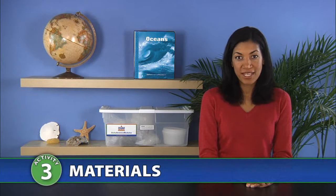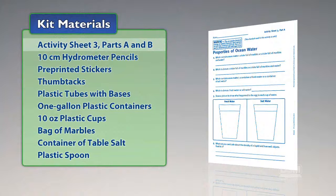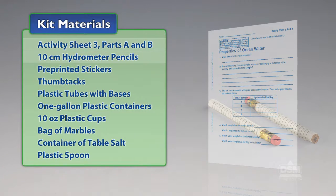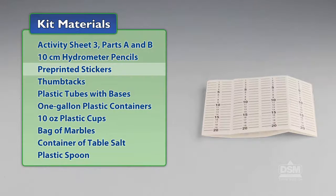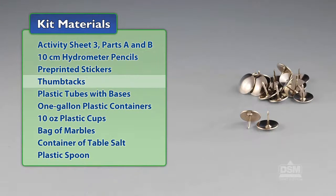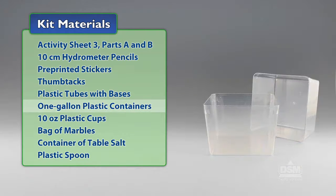You will need the following materials from the kit: Activity Sheet 3, Parts A and B; 10-centimeter hydrometer pencils; pre-printed stickers; thumbtacks; plastic tubes with bases; and 1-gallon plastic containers.